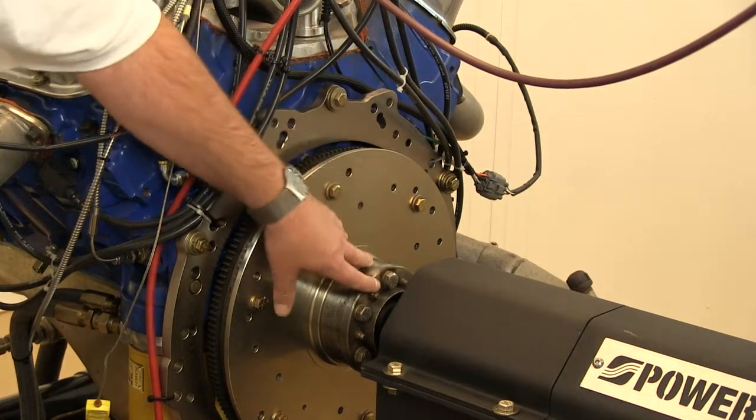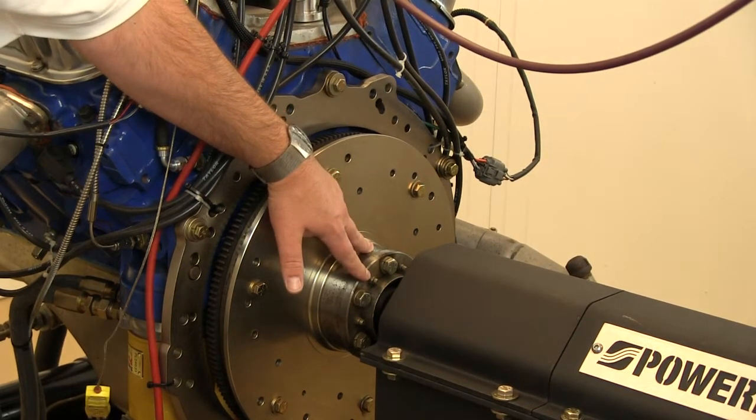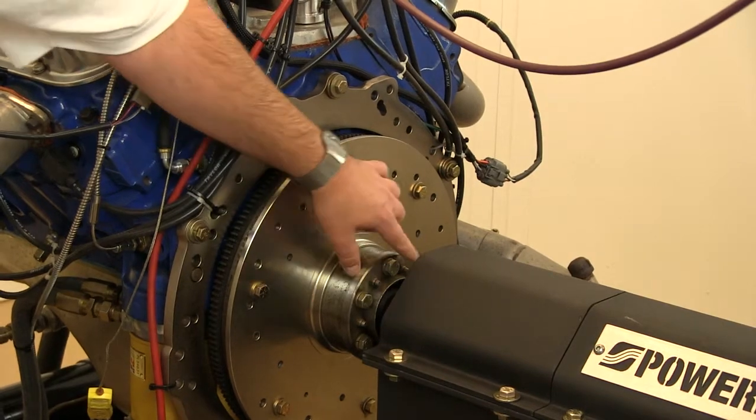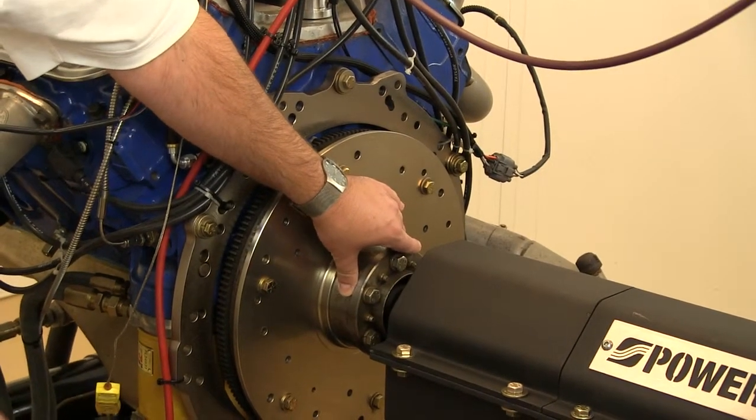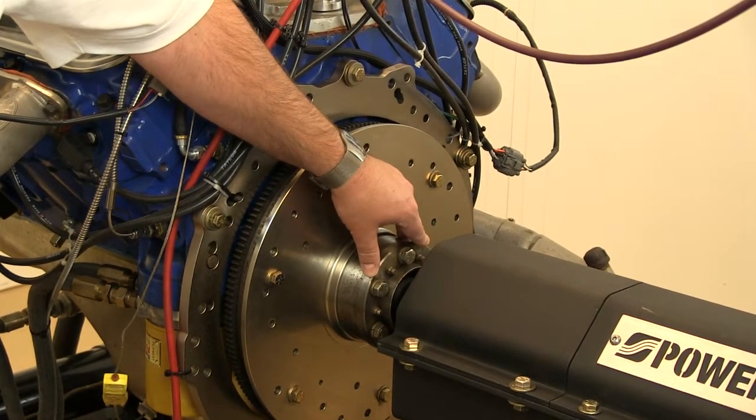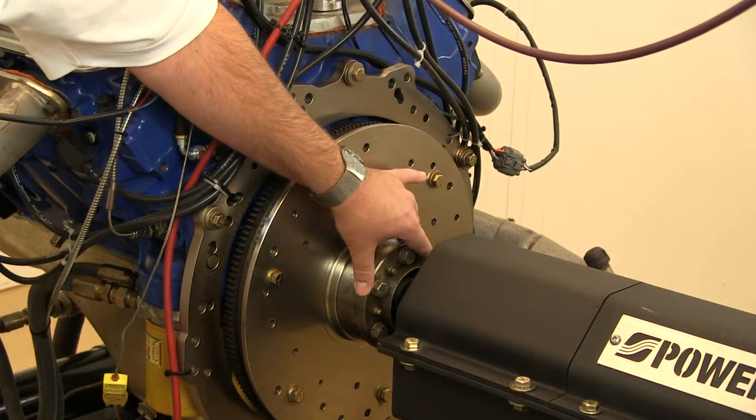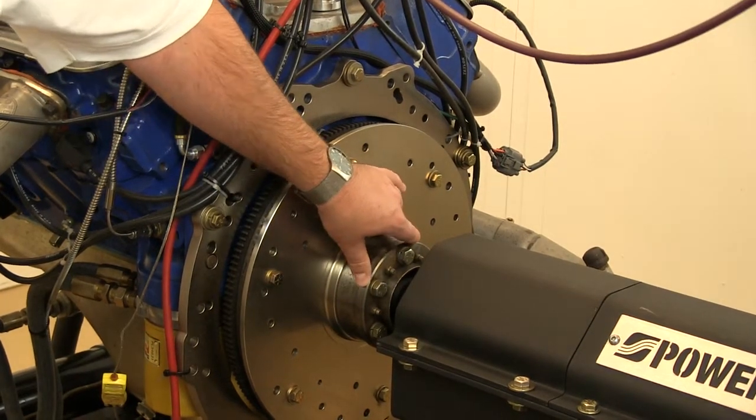You'll want to grease this with the Redline CV2 synthetic grease that came with the dyno, hitting each one of the Zerk fittings. Every two engines, generally we say hit it with at least one shot of grease every engine. The reason is you're constantly removing and replacing this, so make sure you always have fresh grease in there.